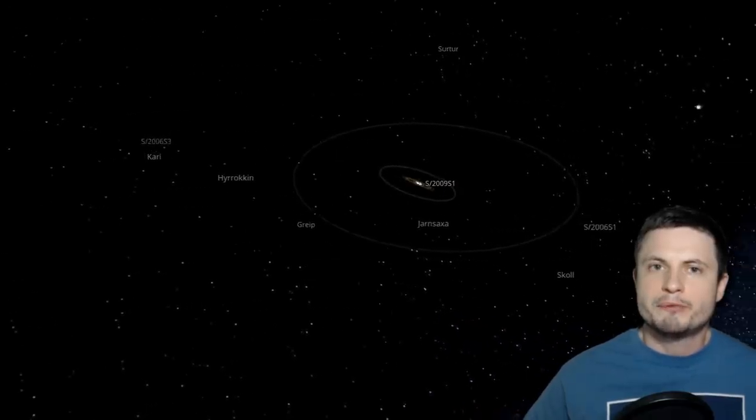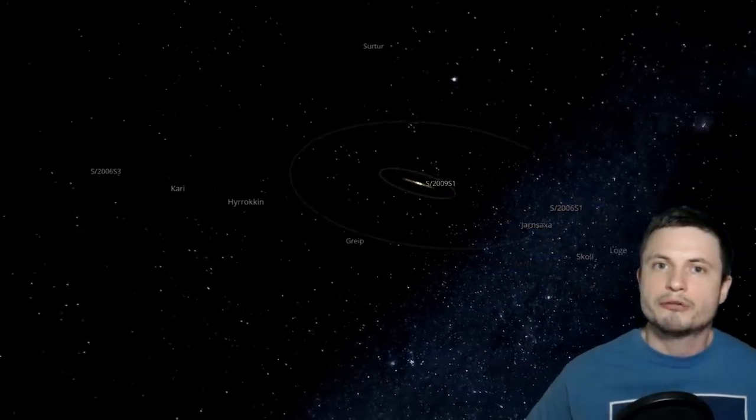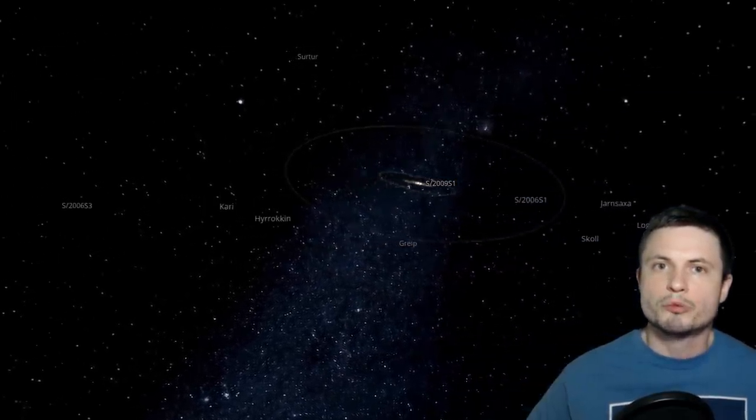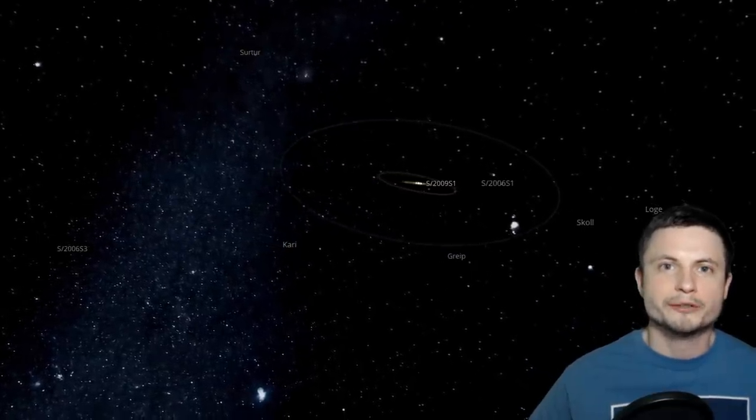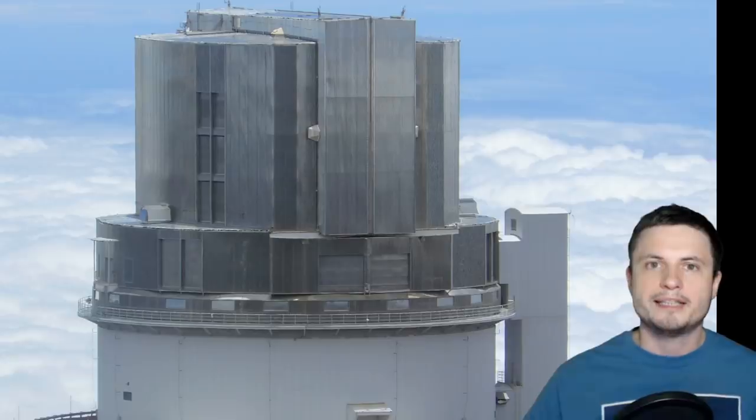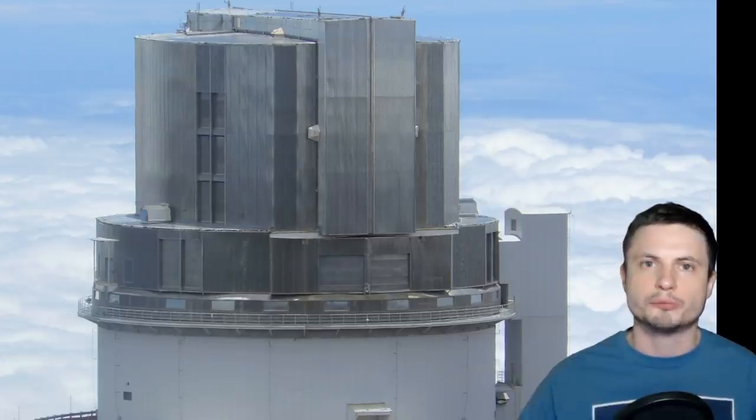Then in 2006, a famous astronomer, Scott Sheppard, announced the discovery of several more moons, specifically nine more moons, but this was done with a ground telescope, the Subaru telescope. And this is what this beautiful Subaru telescope looks like.